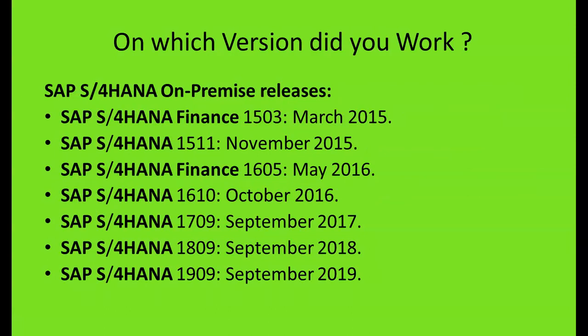Which SAP version did you work on? There are many on-premise releases to be aware of. SAP S4 HANA Finance was released in 1503 (March 2015), with features specifically related to finance. Then came S4 HANA 1511 (November 2015), S4 HANA Finance 1605 (May 2016), S4 HANA 1610 (October 2016), S4 HANA 1709 (September 2017), S4 HANA 1809 (September 2018), and S4 HANA 1909 (September 2019). The first two digits of the version name represent the year and the next two digits the month of launch — so 1909 means September 2019.